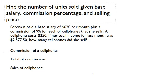We're going to solve this in three steps. Number one, we're going to find the commission of a single cell phone. Number two, we'll find her total commission. And then lastly, number three, we'll figure out how many cell phones she sold.